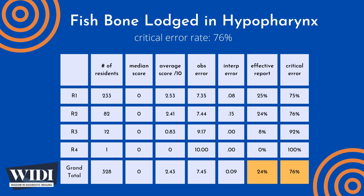We define a report having a critical error to be one with scores between 0 and 2 — in terms of letter grades, an F or a D. In this most missed case, 76% of residents produced reports with critical errors.